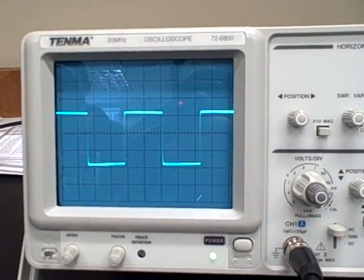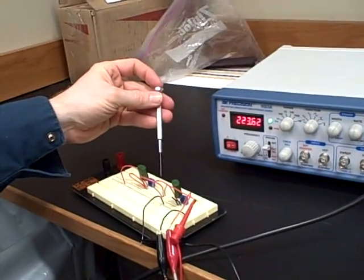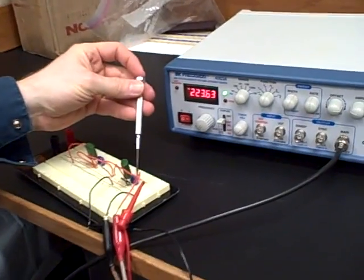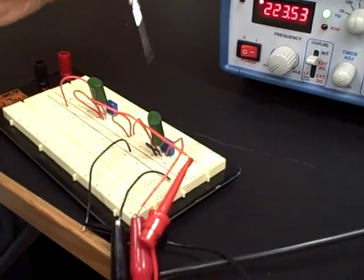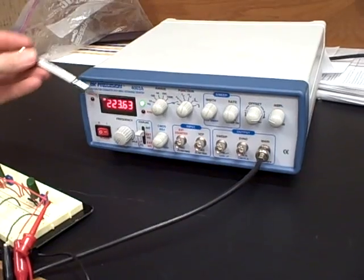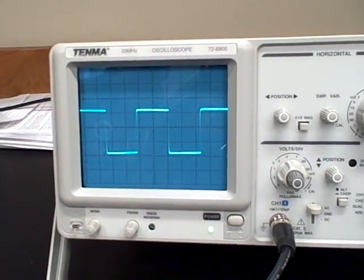Right over here we have our printed circuit board with a lead-lag network built. I've got a lead RC network here and a lag RC network there. We have a signal generator set to put out a square wave, and on the oscilloscope we can see the square wave right now.